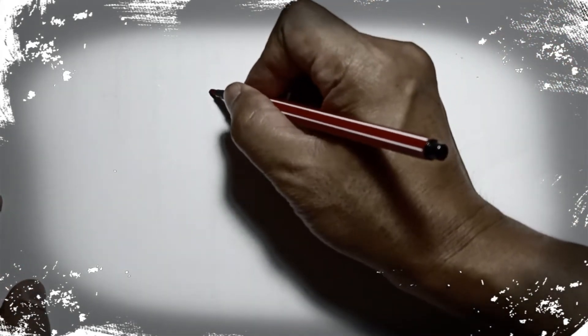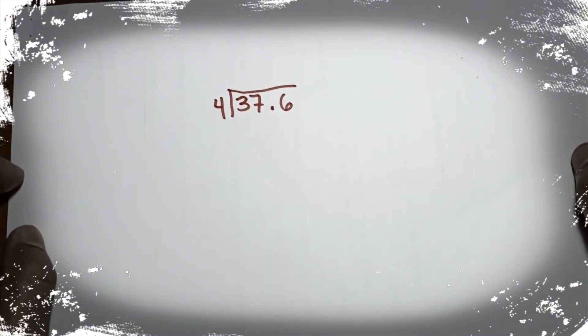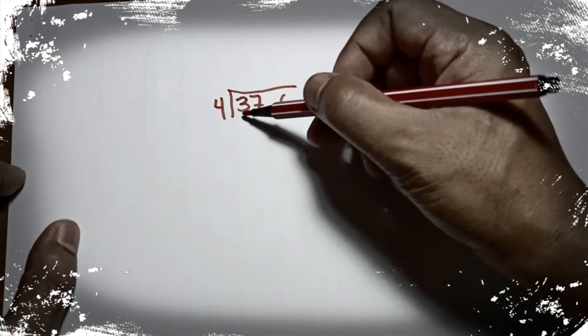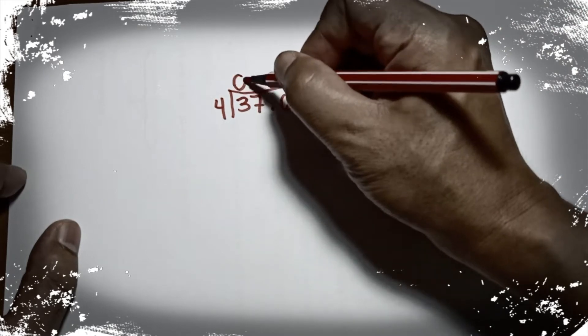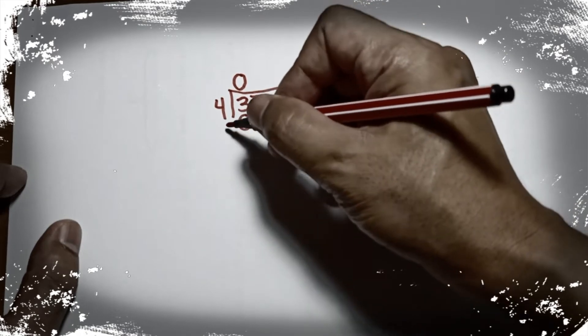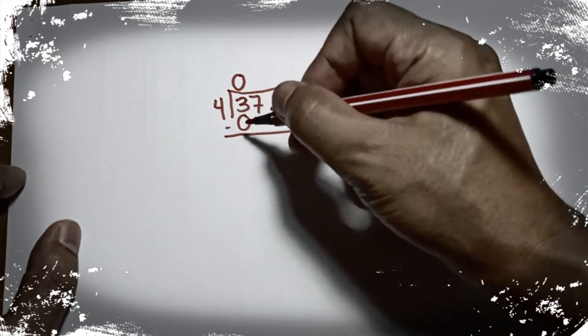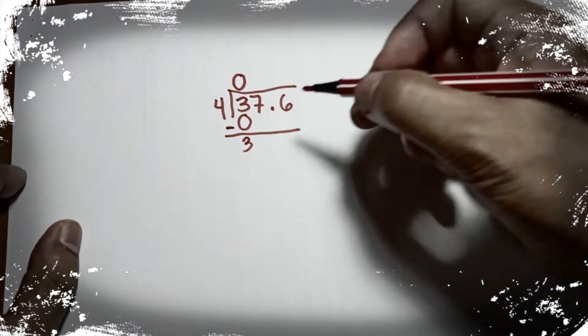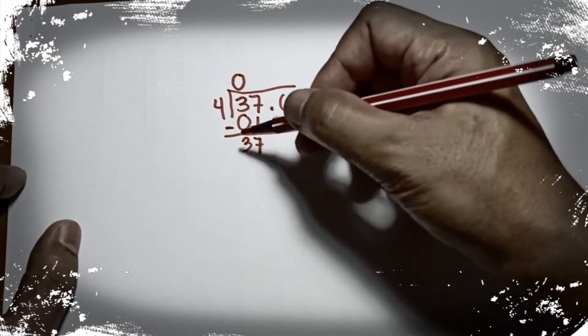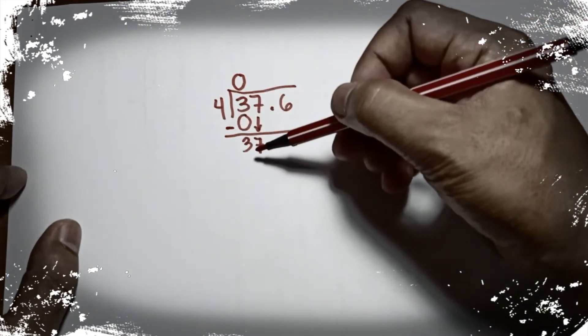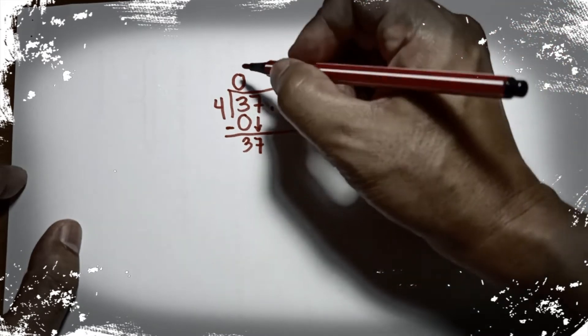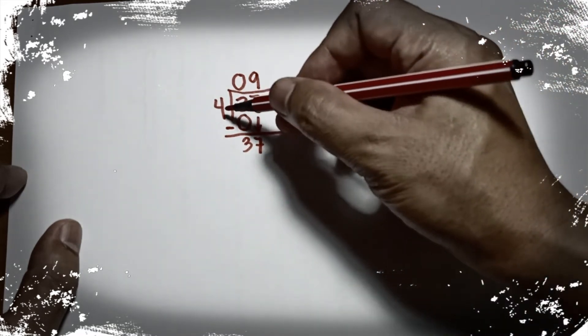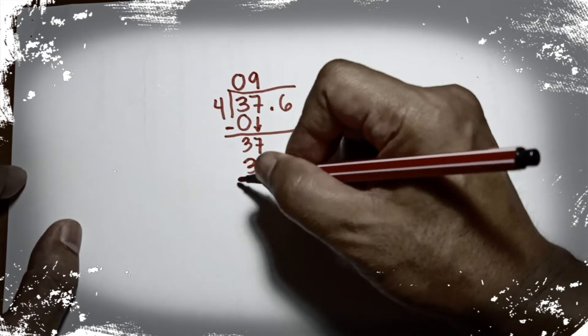For example, if we have 37.6 divided by 4. How many 4s can you make from 3? You cannot make 4 out of 3, so it's 0. 0 times 4 is 0, then 3 minus 0 is 3. Now you have to bring down 7 so that it will become 37. So how many 4s can you make from 37?